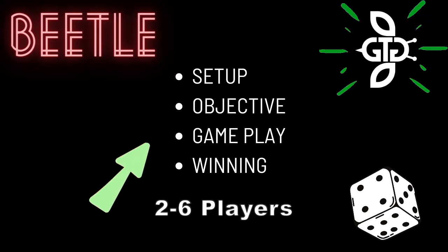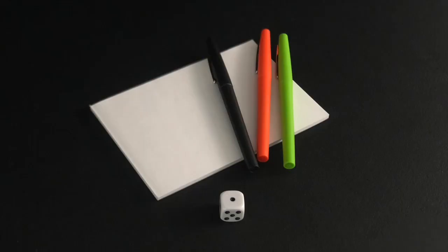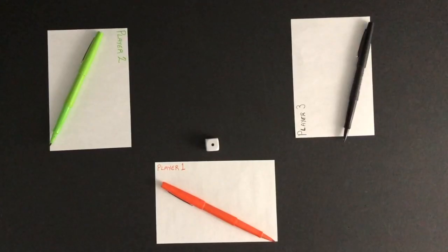The game is played with two to six players. To play you will need one dice and a piece of paper and pen for each player. Each player is given a piece of paper and a pen. The youngest player in the game is the first to roll.